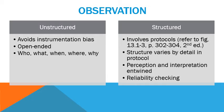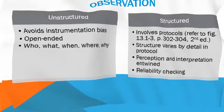Structured observations involve protocols that direct the observer to tally or record certain behaviors. Structure varies by the detail specified in an observation protocol. In structured observations, perception and interpretation are entwined, and reliability checking ensures that all observers record information similarly. Examples of protocol may be found in the second edition of the real-world evaluation text on pages 302 to 304, figures 13.1 to 13.3.